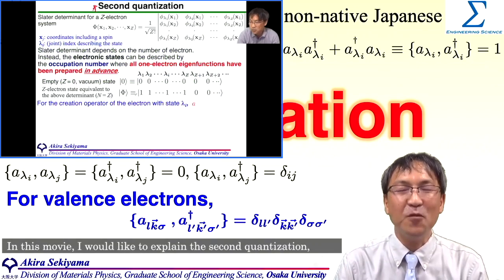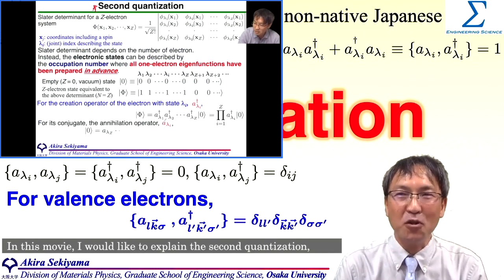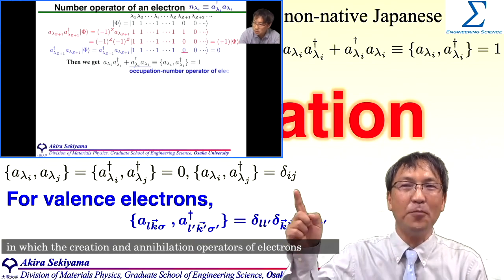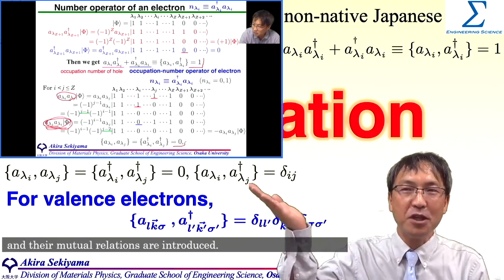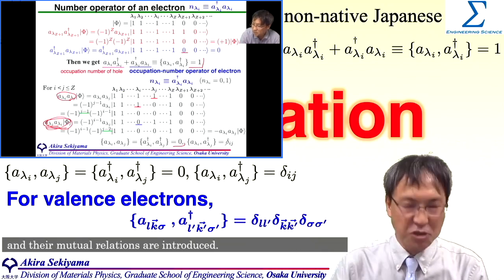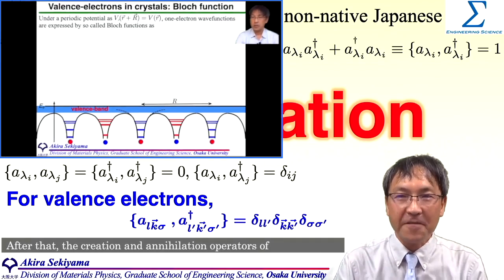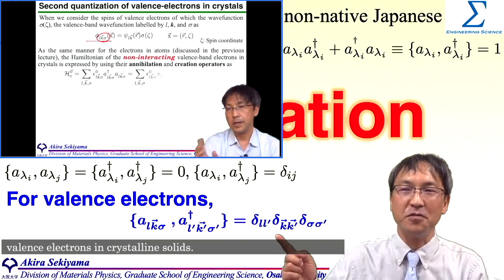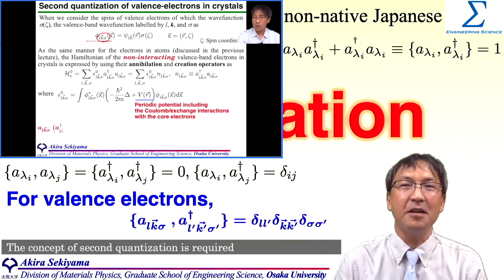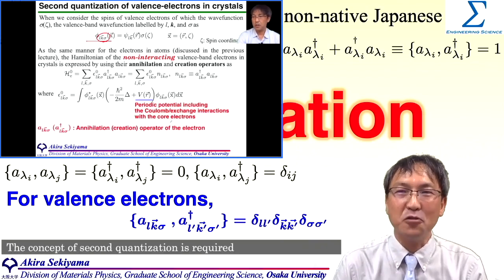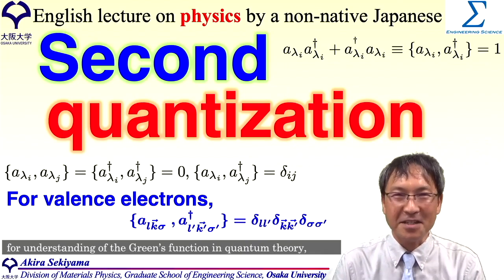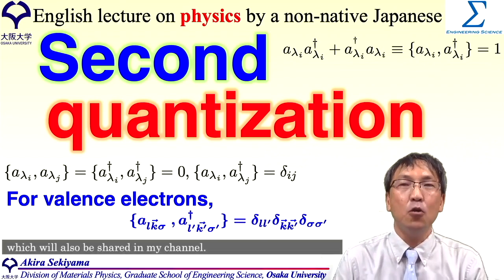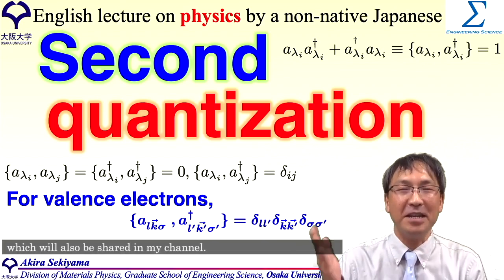In this movie, I would like to explain the second quantization, in which the creation and annihilation operators of electrons and their mutual relation are introduced. After that, the creation and annihilation operators of valence electrons in crystalline solids. The concept of second quantization is required for understanding of the Green's function in quantum theory, which will also be shared in my channel.